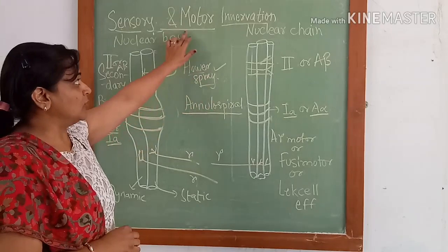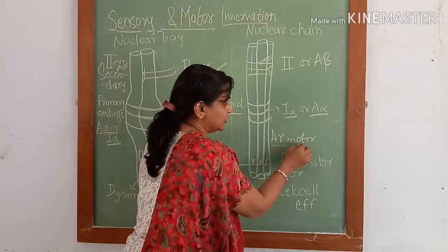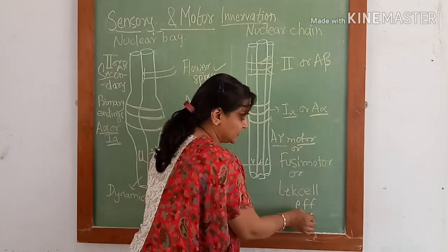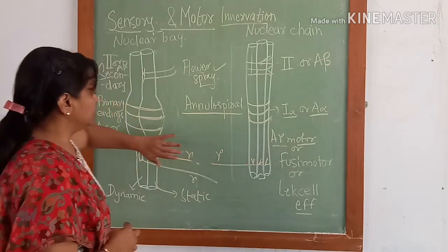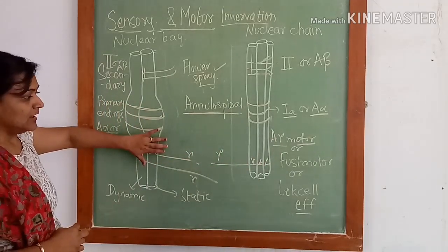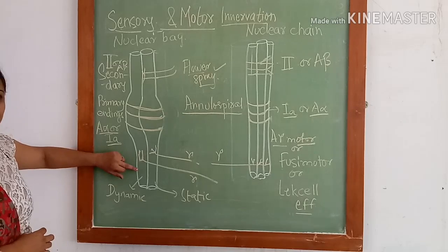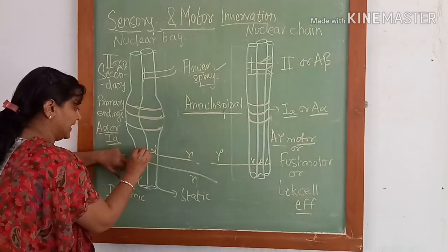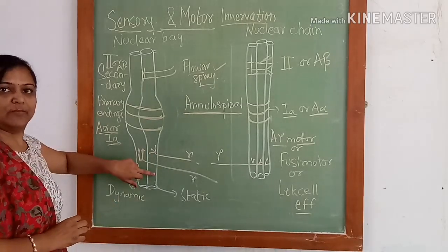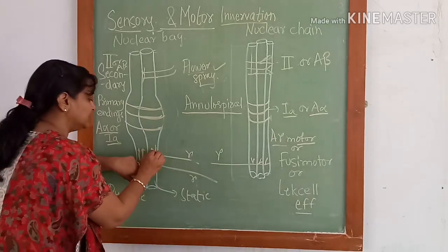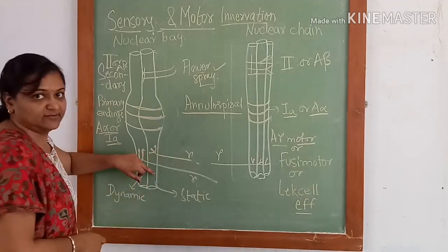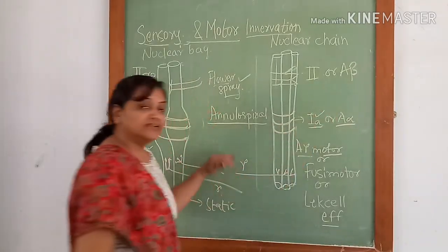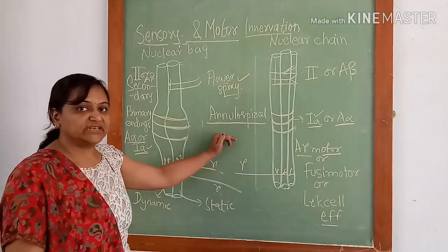For motor innervation, there are A-gamma motor fibers, also called fusimotor fibers, supplying both nuclear chain and nuclear bag fibers. In the case of dynamic nuclear bag fibers, these are plate endings, and in the case of static nuclear bag fibers, these are trail ending gamma effects.